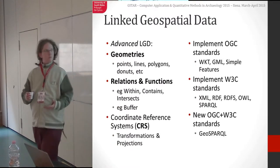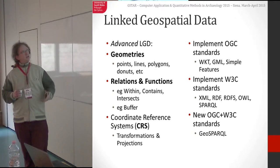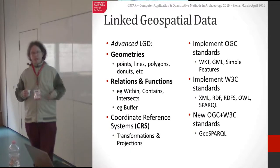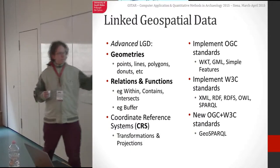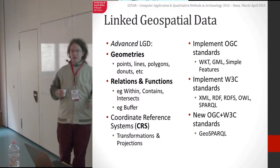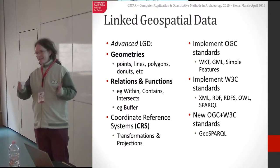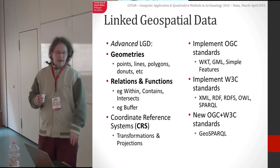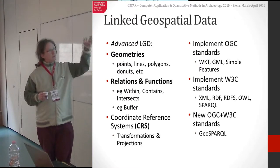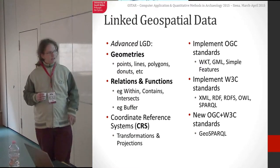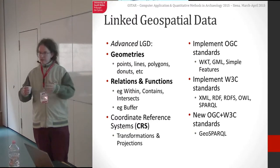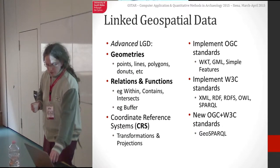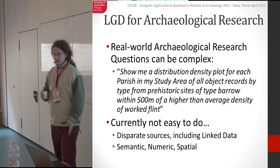The more advanced stuff comes by including richer geometries, so we can actually use points, lines, and polygons, and spatial relations as well. Importantly, we can incorporate coordinate reference systems, so we're not stuck with the web Mercator world view that Google would like to use. The way to do this is to implement OGC and W3C standards, and these two standards bodies have come together to produce the GeoSPARQL standard, which is a geospatial ontology and query language.